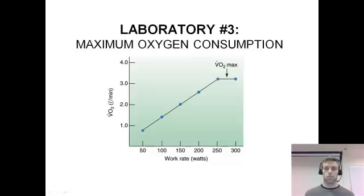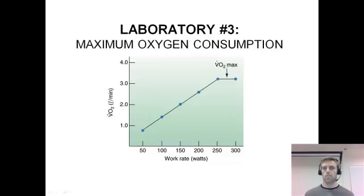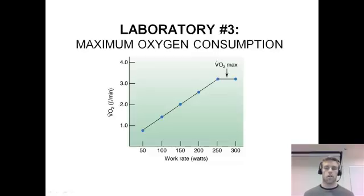When we get to a higher work rate — in this example, when we get to 250 — we'll see an increase in work rate but no increase in VO2. That means we're maxing out our aerobic systems, and any increase in work rate will come from energy supplied by our anaerobic systems. We've hit our VO2 max.